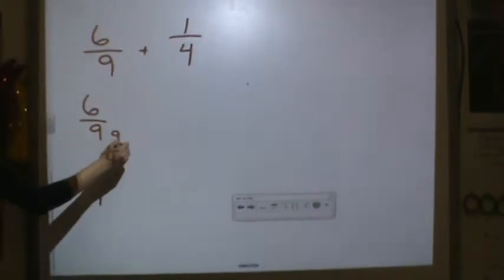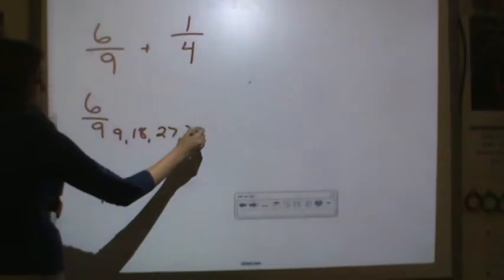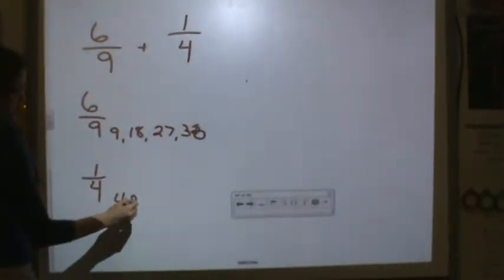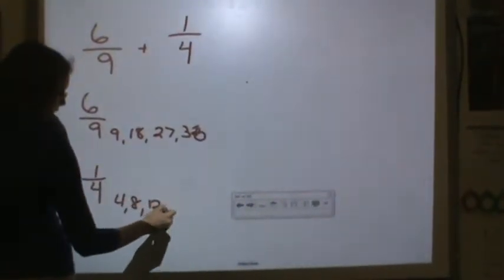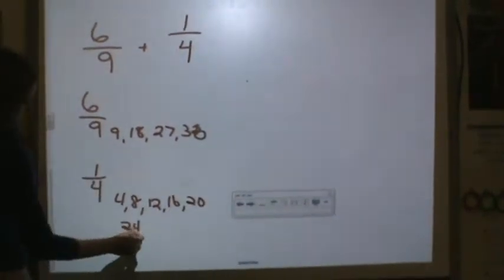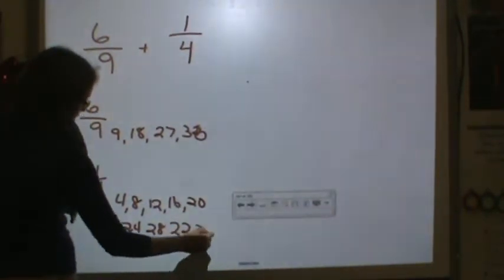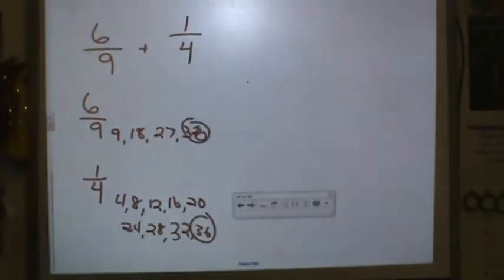Nine, doing my multiples, nine, eighteen, twenty-seven, thirty-six. Four, eight, twelve, sixteen, twenty, twenty-four, twenty-eight, thirty-two, thirty-six. Alright, there's my common multiple.